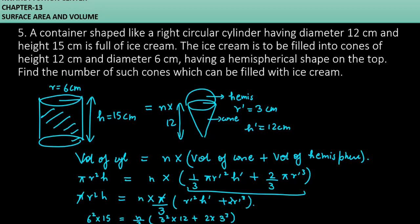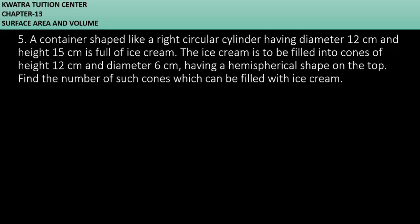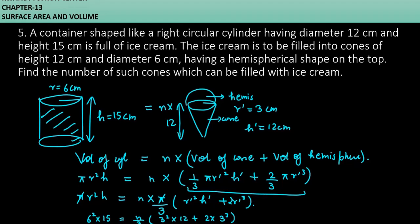Now we'll substitute the value and find the value of n. So 6 square into 15 is equal to n over 3, and 3 square into 12.